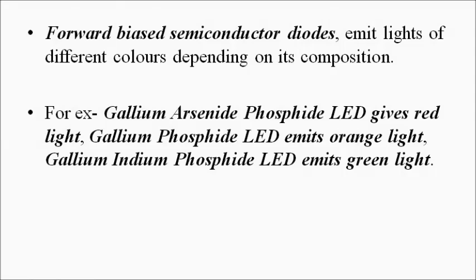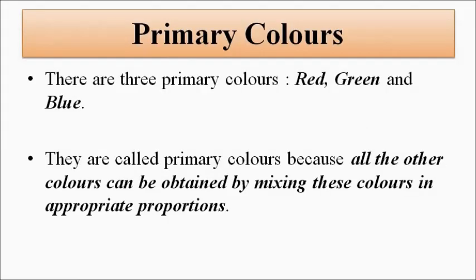In television there is a concept of primary and secondary colors, or complementary colors. Primary colors are the three base colors, and all other complementary colors are obtained when they are mixed in appropriate proportions. The three primary colors are red, green, and blue — normally represented by RGB. These are the base colors and all the other colors are obtained from the primary colors by mixing them in appropriate proportions.